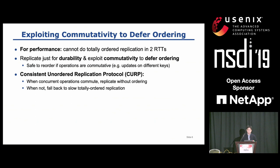So in order to get performance, we need to give up replicating with total order. CURP achieves durability without ordering and uses commutativity of operations to defer agreement on operation order. This is possible because commutative operations can be reordered without affecting the system state. For example, in a key-value store, changing the execution order of updates on different keys will not impact the resulting system state. If an operation commutes with other operations issued around the same time, it can be replicated without ordering, thus achieving high performance by replicating in parallel with ordering. On the other hand, if operations are not commutative, CURP falls back to two RTT totally ordered replication.